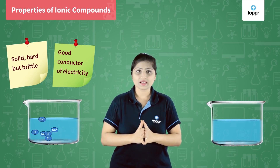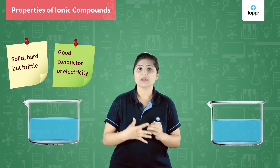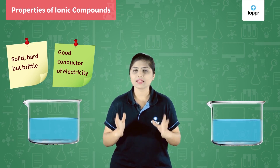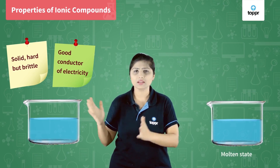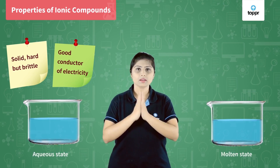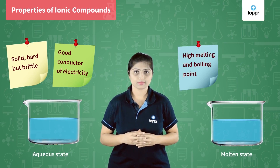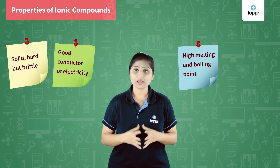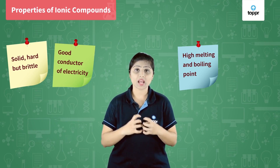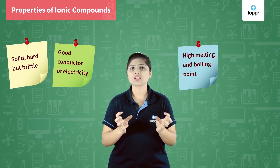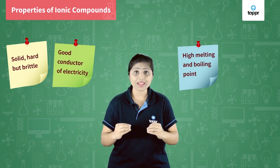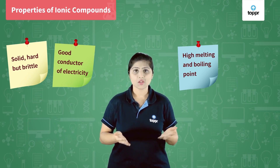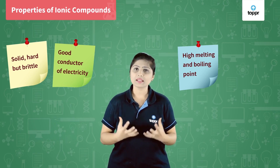So electrical conductivity is very good in ionic compounds, but in the solid state they cannot conduct electricity; they conduct electricity either in the molten state or in the aqueous state. The next property is melting point and boiling point. Generally all ionic compounds have high melting and boiling points because the force of attraction between the two charged ions is so strong that breaking these ionic forces requires a lot of energy.